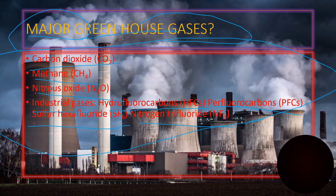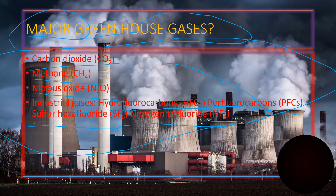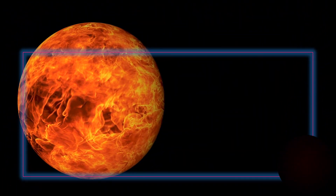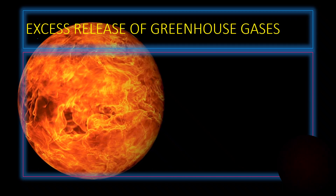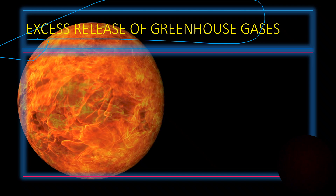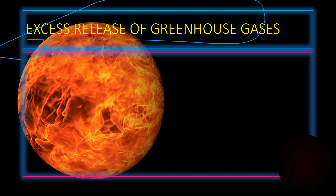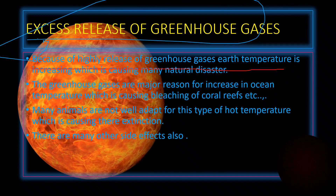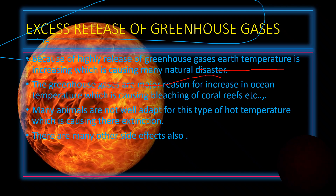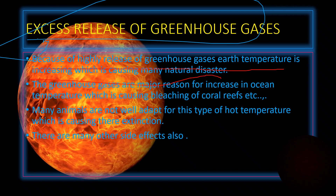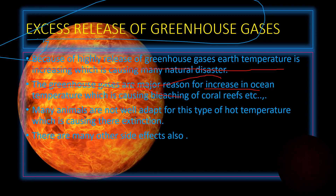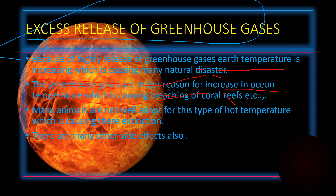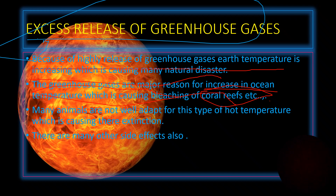What are the main causes for greenhouse effect? If there is excess release of greenhouse gases in the atmosphere, because of this highly increased release, Earth's temperature is increasing which is causing many disasters. Greenhouse gases are a major reason for increasing ocean temperature, which is causing bleaching of coral reefs.